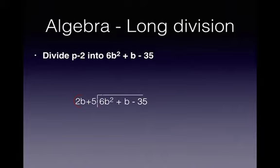So take the leftmost term and the leftmost term. 6b squared divided by 2b is 3b. Now multiply back. 3b by the two terms outside the bracket. Give me that.